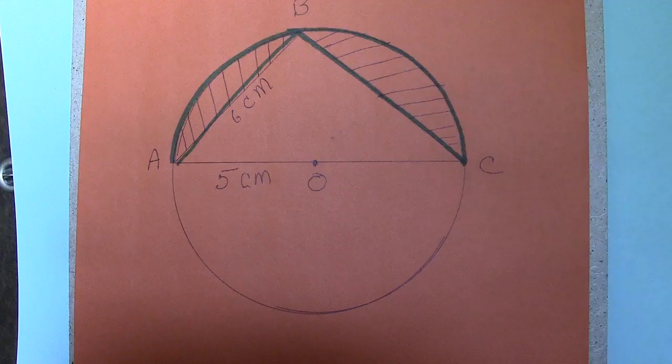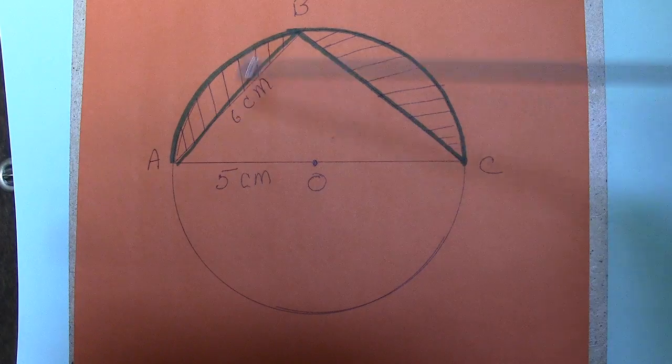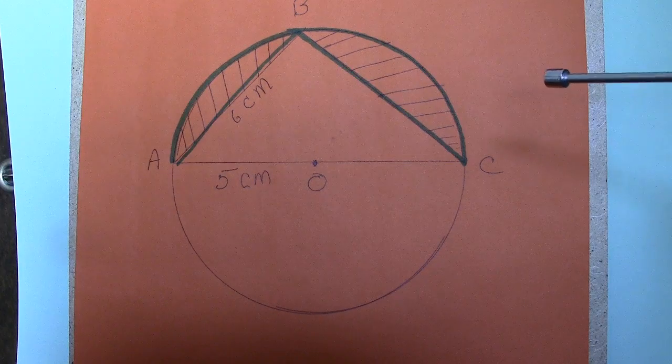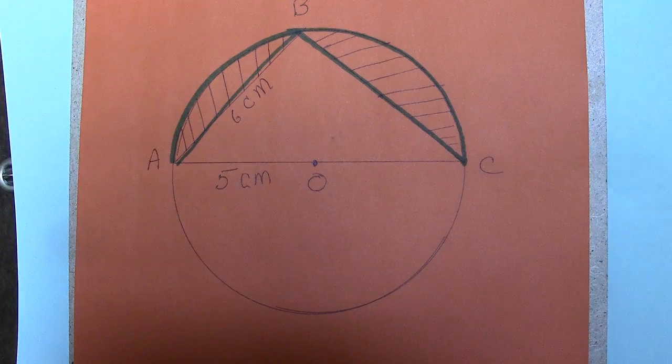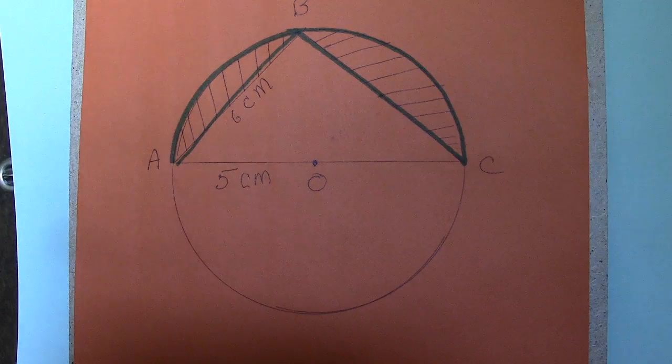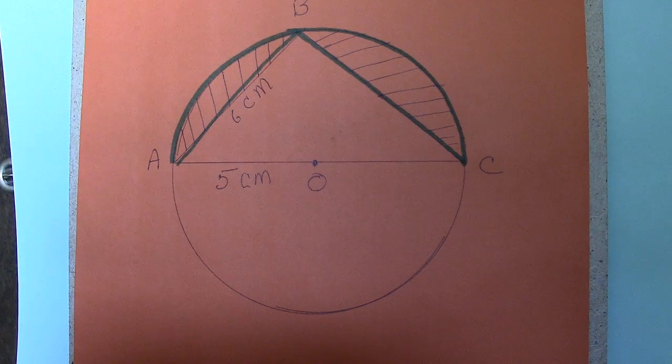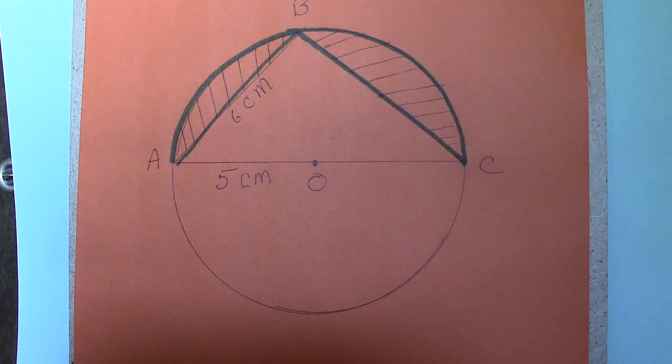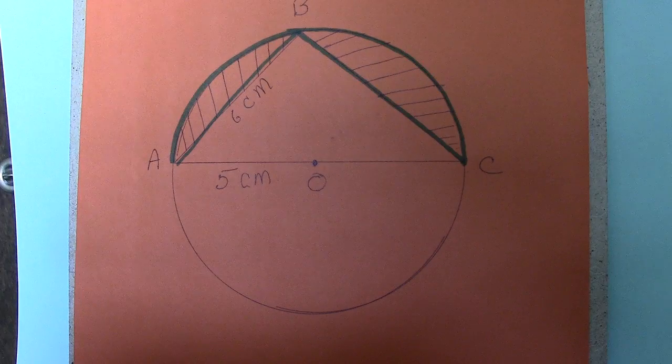So now we know that the side AB is given as 6 cm. And the side BC is 8 cm. So the sum of these two sides is 14 cm. The arc ABC is 5π. So the perimeter of the shaded region is 5π plus 14.